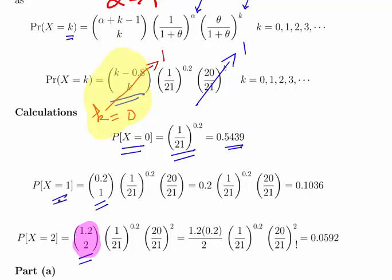When we calculate it for probability of x equal to 1, that is from 0.2 choose 1, or the binomial coefficient of 0.2 and 1, which is something we can calculate. It just works out to be 0.2. We have 1 over 21 to the power of 0.2, which stays consistent the whole way through. And then we have 20 over 21 to the power of 1. So 0.2 times 1 over 21 to the power of 0.2 times 20 divided by 21. That gives us the probability of x equal to 1 equals 0.1036.